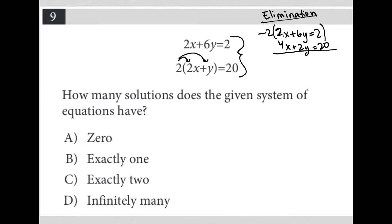In doing so, the top equation becomes -4x + 6y = 2, and the bottom equation remains 4x + 2y = 20.